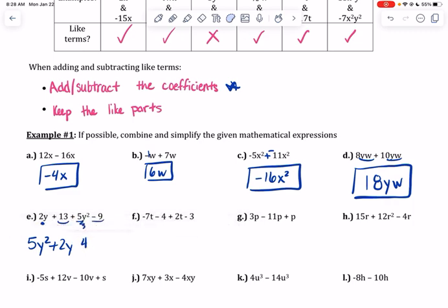So you'll keep the 5y squared plus 2y plus 4. The order doesn't really matter. I just like to keep the higher exponents in the front. But if you guys had it as 4 plus 5y squared plus 2y, order doesn't matter as long as your numbers and signs, positive negative signs, are correct.